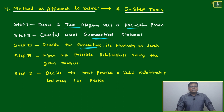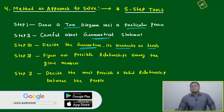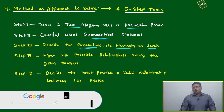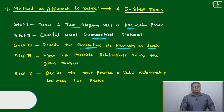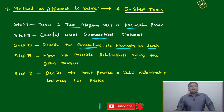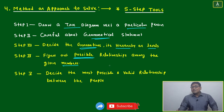Afterwards, consider the hierarchy or levels. We have seen six stages, and within those six stages we have to decide — two or three generations or two or three levels will be given. Step four: figure out the possible relationships among the given members. It is not the exact relationship, but the possible relationship.